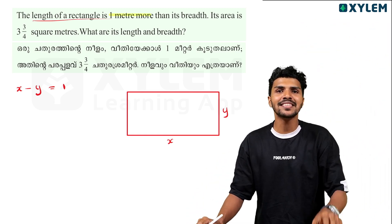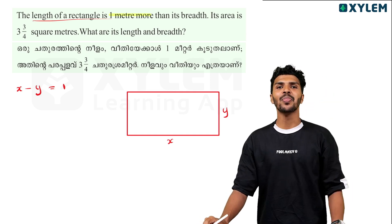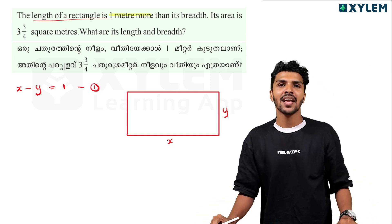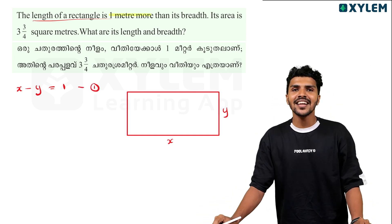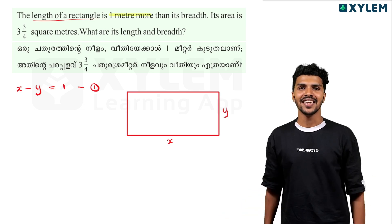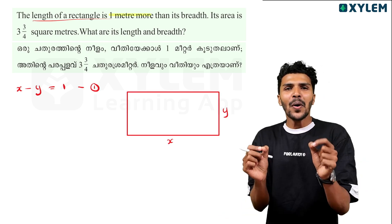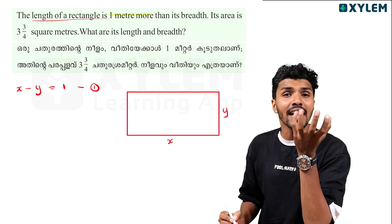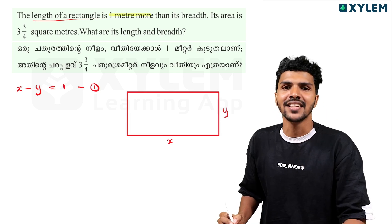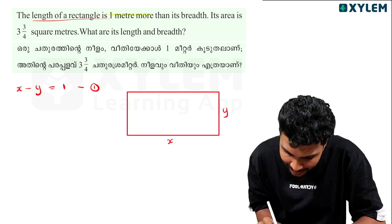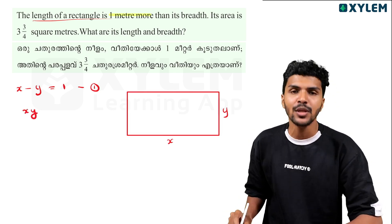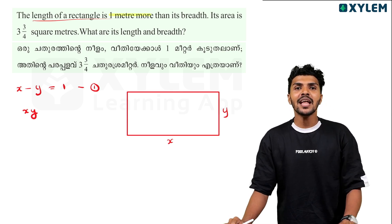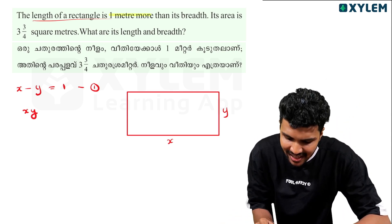So, L minus B is equal to 1. That is the first equation. The next step: if you look at it, you have an area. Area is called the breadth times length.